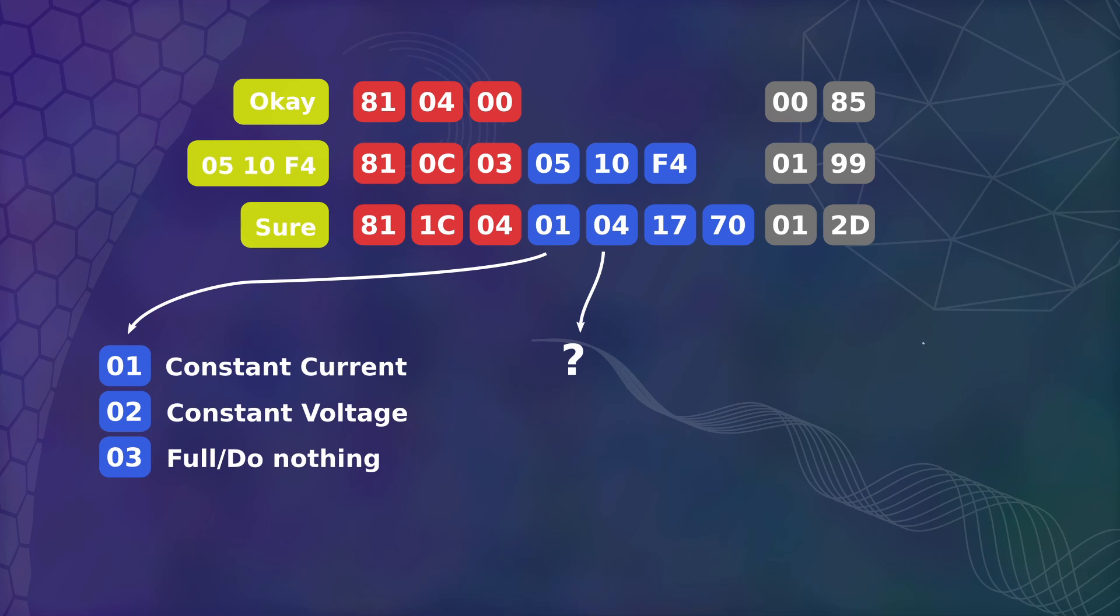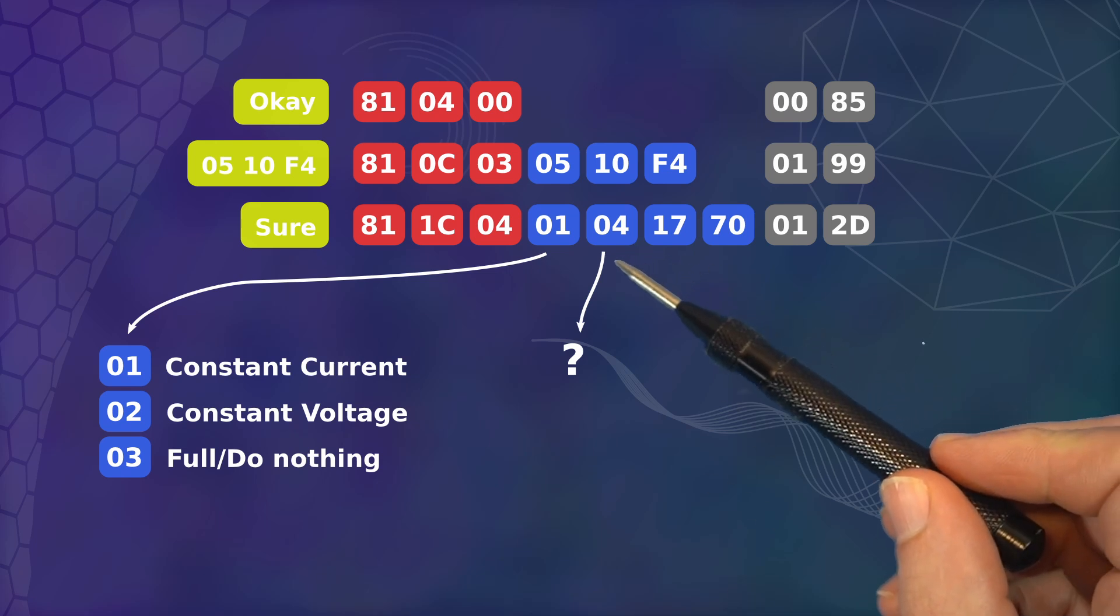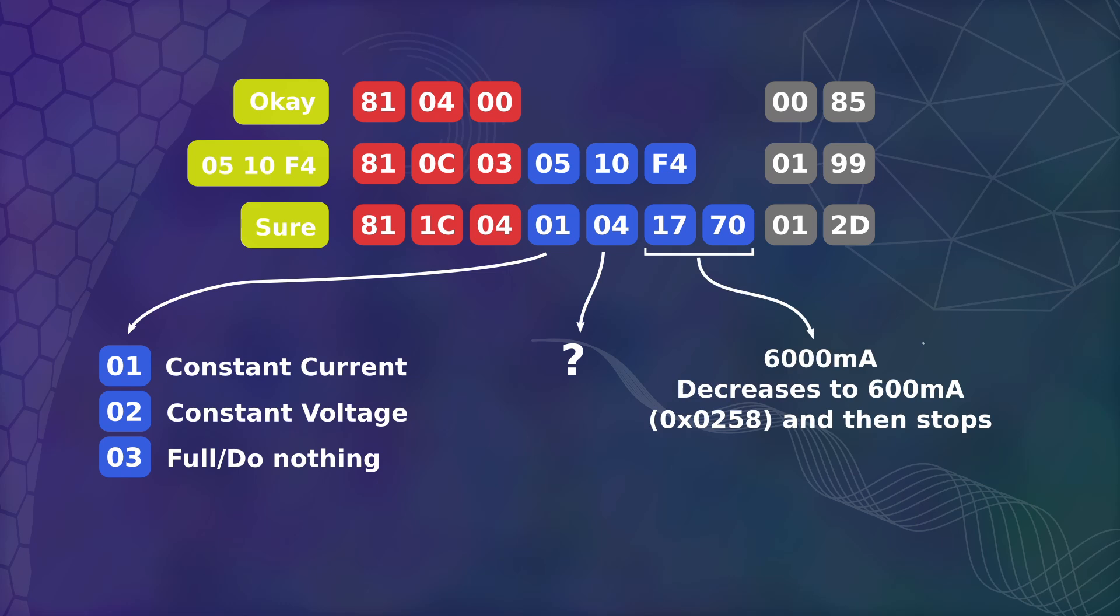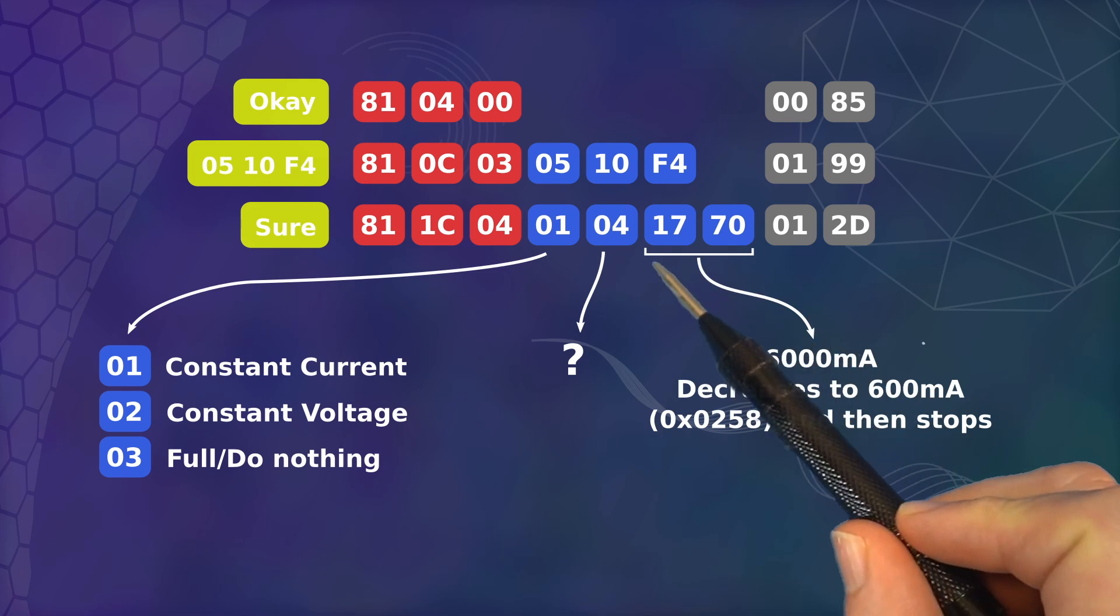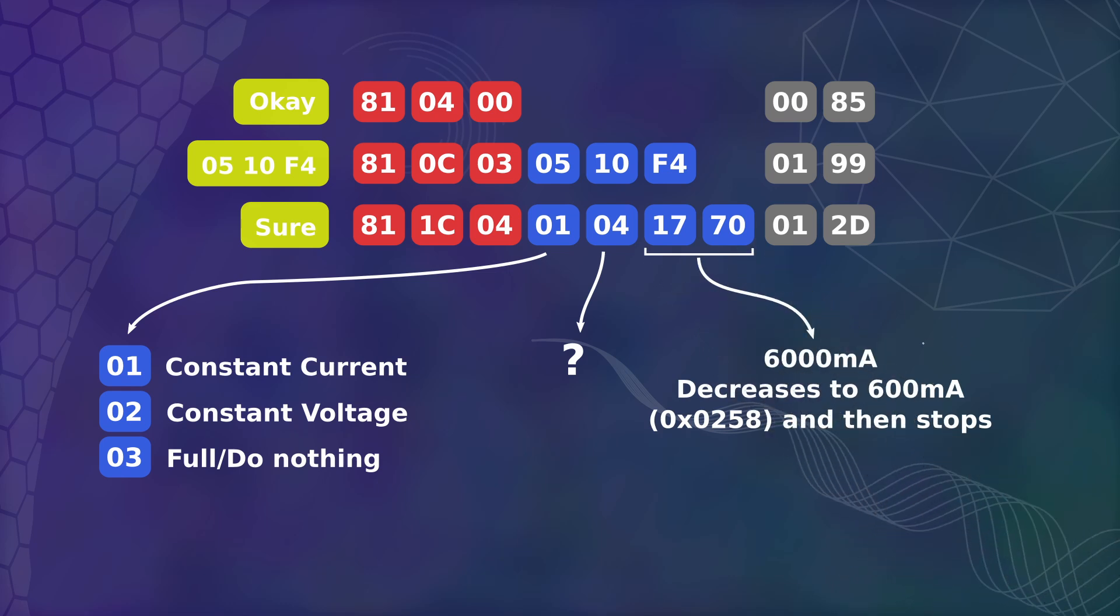The second byte of the payload is always 04. It never changes, so I have no idea what it means. The last two bytes are the battery requesting a specific current from the charger. It matches closely with what I'm reading on the clamp meter.